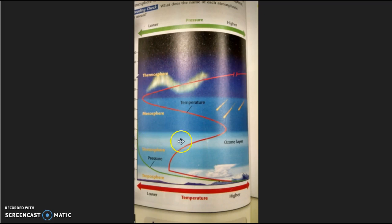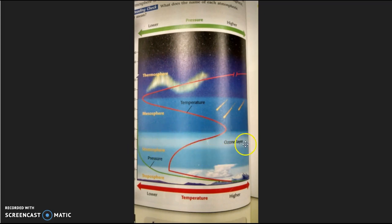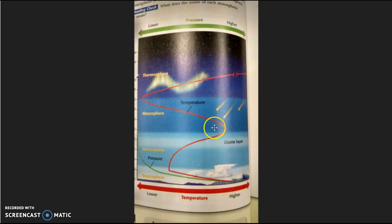The ozone particles begin to rub back and forth and bounce off each other as they receive this energy — and this is thermal energy. They then send off this energy out into the surrounding atmosphere as heat. So this layer within the stratosphere is warming, and it sends off that thermal energy as heat, warming up the surrounding layer of atmosphere — the stratosphere. That's why the stratosphere increases in temperature as we increase in altitude.